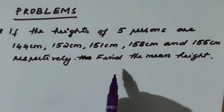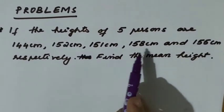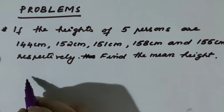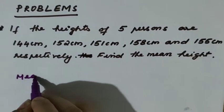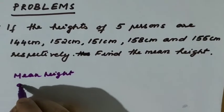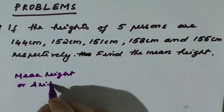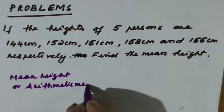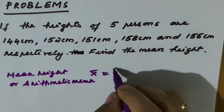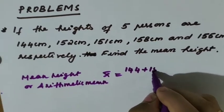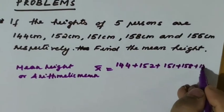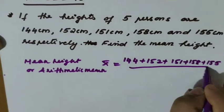Here, five observations are given — one, two, three, four, five. Five persons means five observations. We have to find the mean height, which is the arithmetic mean. So x-bar equals the sum of the observations: 144 plus 152 plus 151 plus 158 plus 155, divided by 5.